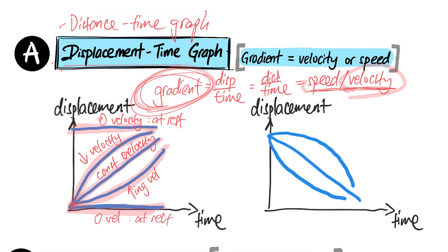You may ask: what's the difference between two flat-line cases? If the flat line is at, say, 10 meters, the object is 10 meters away from the reference point and remains there as time goes by — it's parked 10 meters from the reference point. If the flat line is at zero, the object is at the reference point itself and is parked there.